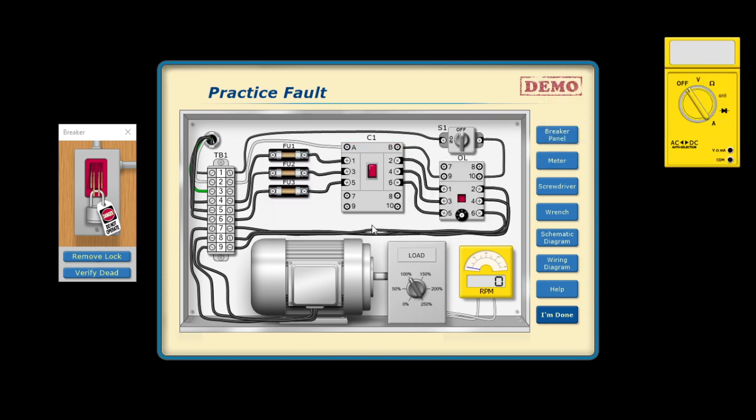And then after you troubleshoot the circuit, you will try it now. So you have to remove the lock, turn it on again, but verify that there are no screws left behind, all wires are connected, and then switch it on. And then let's try to switch on the switch.